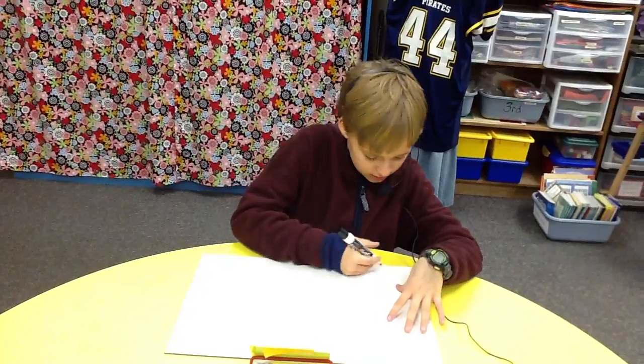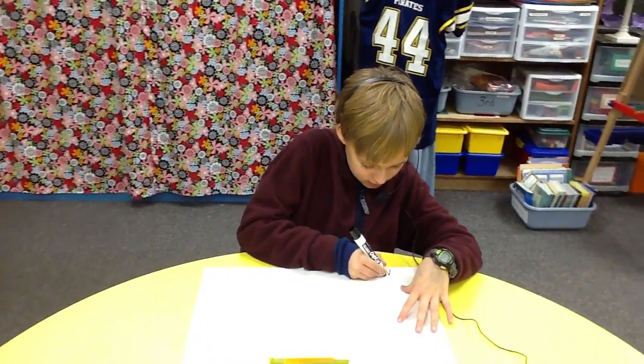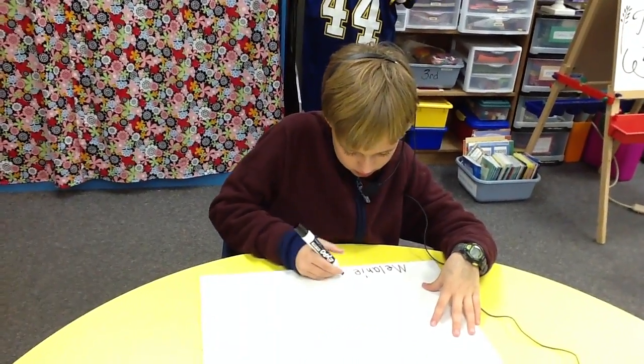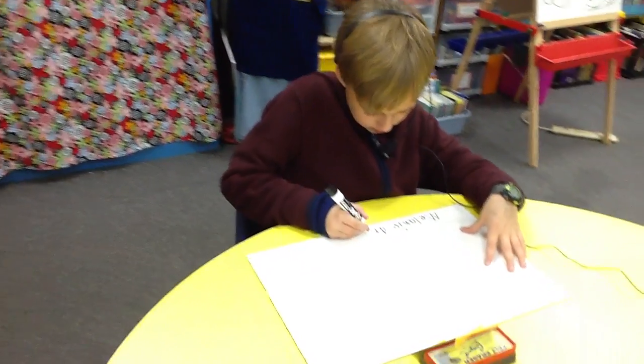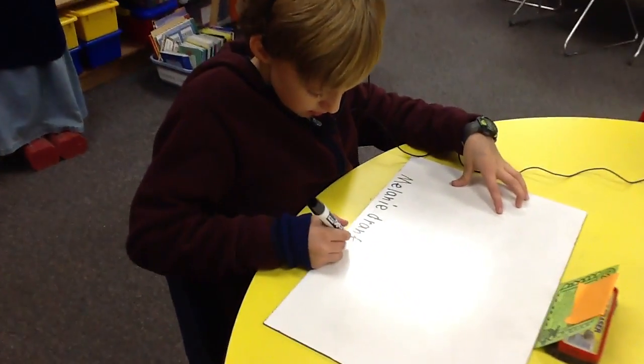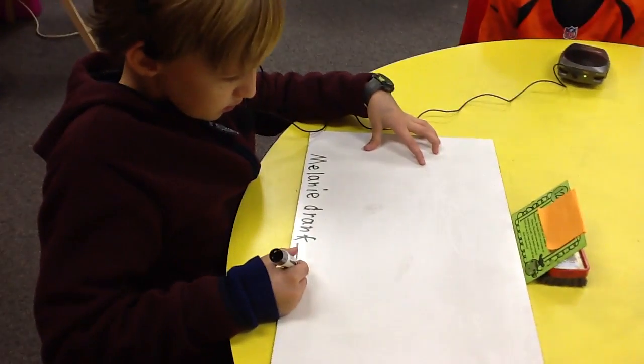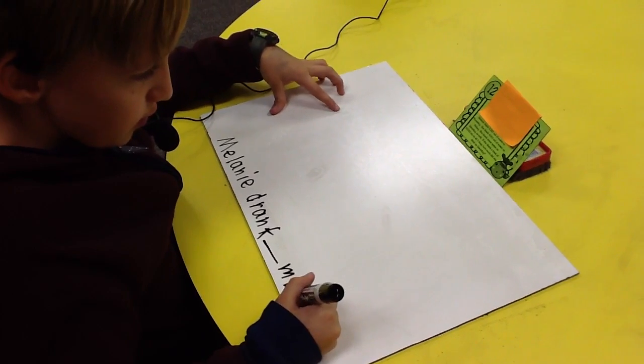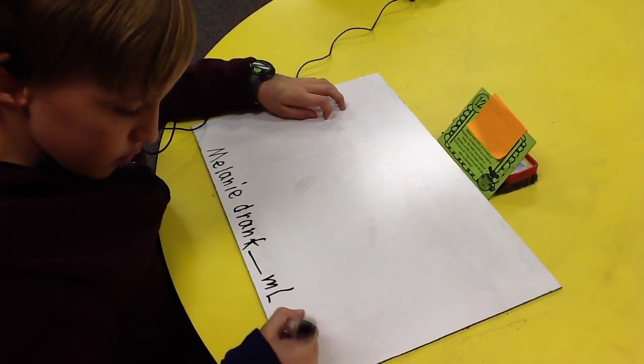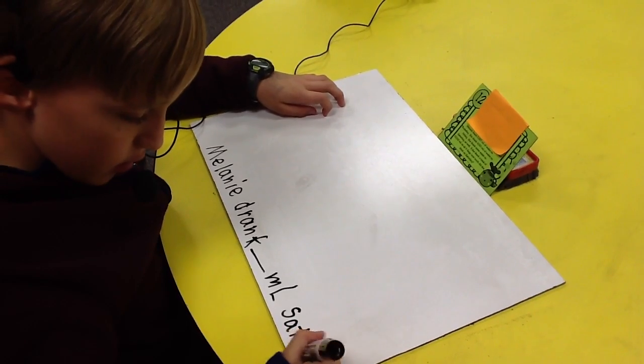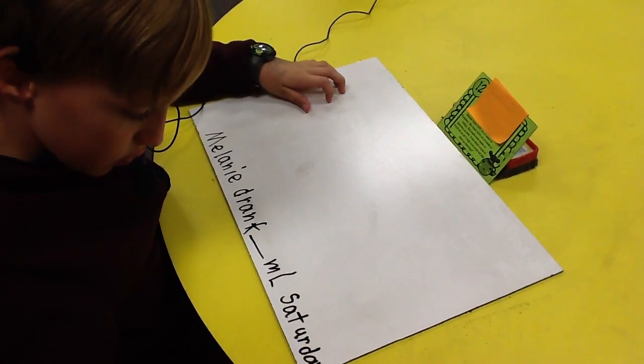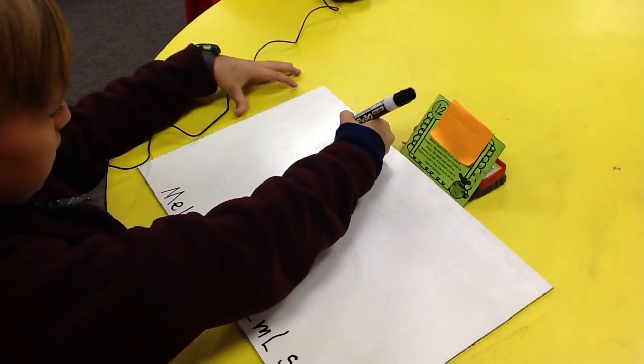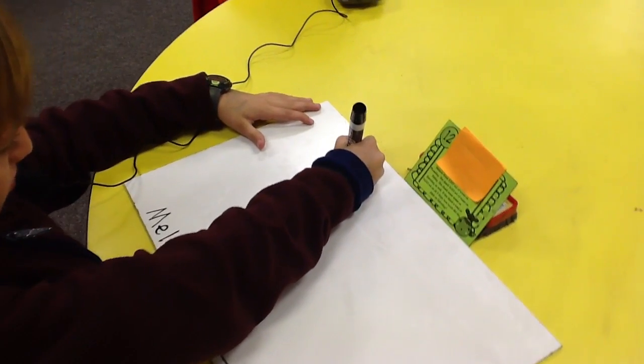So what it's saying basically is, Melanie drank blank milliliters of water on Saturday. So now what we need to do is set our strip diagram.